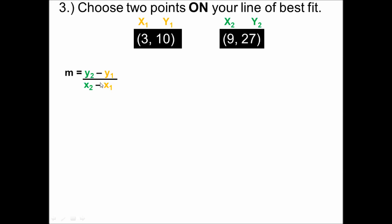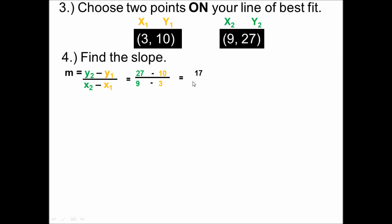Now we need to solve for the slope. Slope has the equation y2 minus y1 over x2 minus x1. So we're going to take 27 minus 10 divided by 9 minus 3. When you take 27 minus 10 you get 17, divided by 9 minus 3 which is 6, and that gives you an answer of 2.83. In science we don't keep things in fractions, so we put 17 over 6 into decimal form: 2.83. Therefore your slope is 2.83.